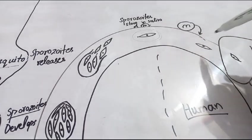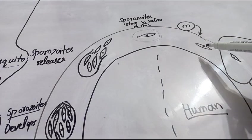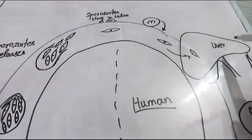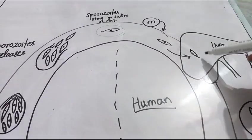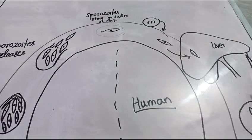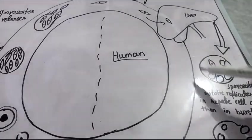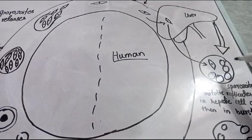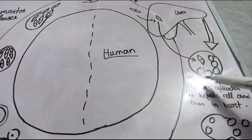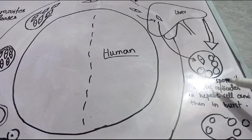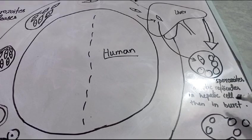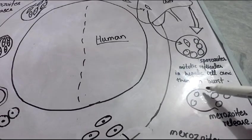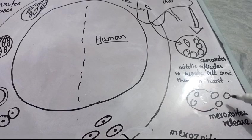The sporozoite enters into the blood and directly goes into the liver. This sporozoite will enter into a hepatic cell — the liver cell. Here the sporozoite will divide rapidly through mitotic division and after that will form various kinds of merozoites. This cell then bursts and these merozoites are released.